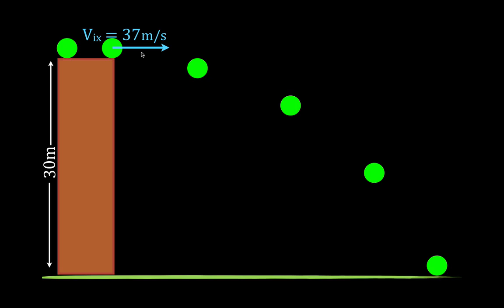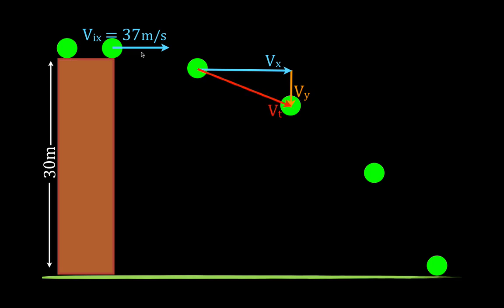It follows that parabolic path because the object is really doing two things at the same time, and those two things are independent of each other. The two things that it is doing: it is moving with a velocity in the x direction, and it is moving with a velocity in the y direction. Those two things are really independent of each other. But when we add those two vectors up head to tail, we get the resultant vector, and that is the velocity of that object.